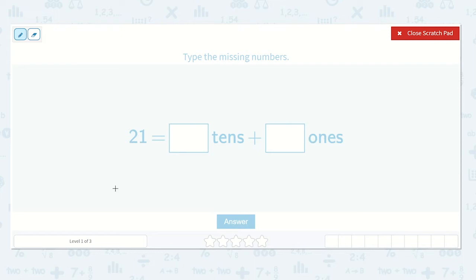21 is equal to how many tens and how many ones? So let's see. If we have 21, let's see how many tens are in that number. I know my tens place is here and my ones place is here.